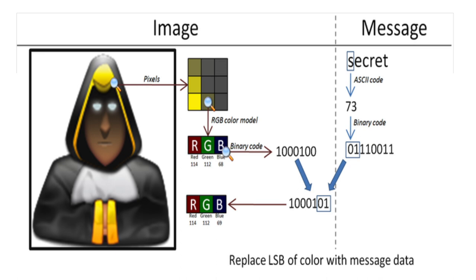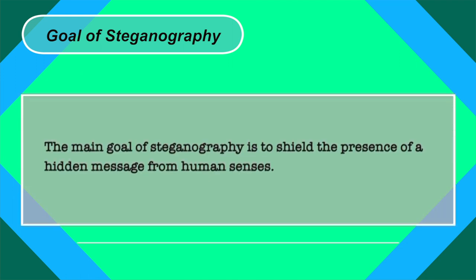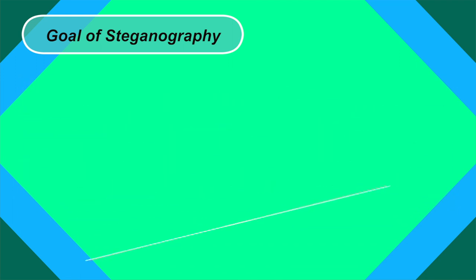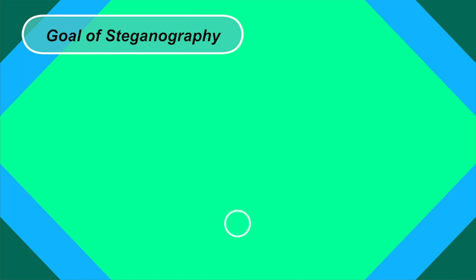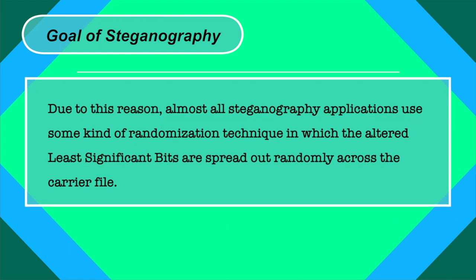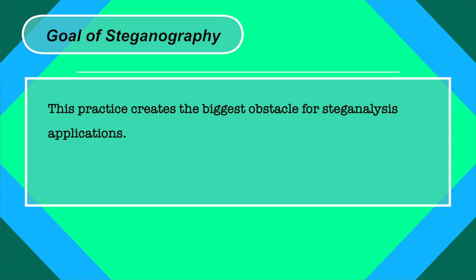Although LSBS is a viable approach, it is too basic to be practical. The main goal of steganography is to shield the presence of a hidden message from human senses. However, modern steg analysis applications have raised the goal to include securing the hidden message from both human senses and digital applications. Almost all steganography applications therefore use a randomization technique in which the altered least significant bits are spread randomly across the carrier file — creating the biggest obstacle for steg analysis.